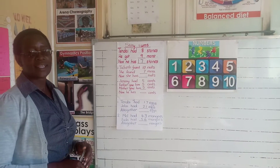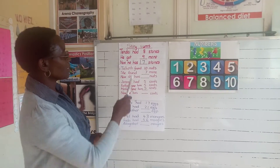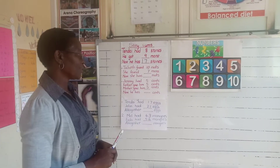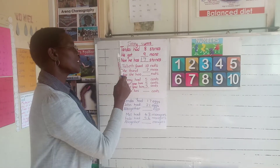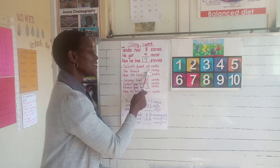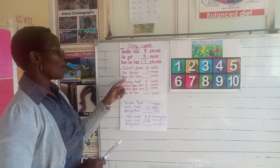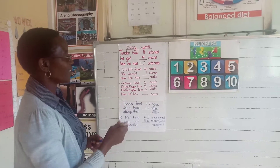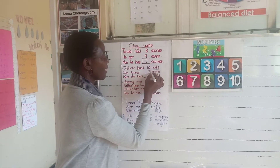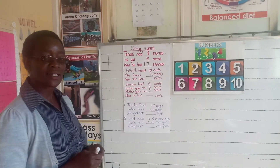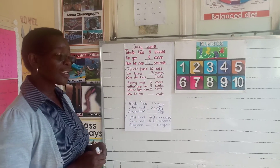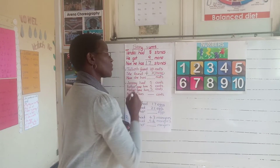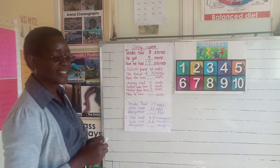Now let's look at another example. Now we have Talbeth. She found ten nuts and then she continued and she found seven more. Now she has how many nuts? Now we have the word 'more' there, which also shows us that what are we doing? We are adding.